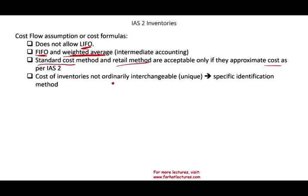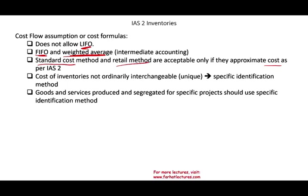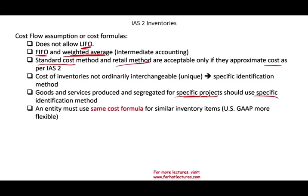Specific identification is not really a cost flow assumption — that's what actually happens in practice. You would use specific identification for unique inventory items or for goods and services produced and segregated for specific projects. Also, under IFRS an entity must use the same cost formula for similar inventory items. In the US you don't have to — you can use one method for some items and another for others. Under IFRS, you must use the same method for similar inventory.